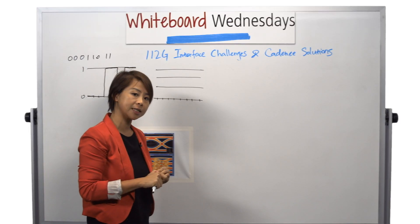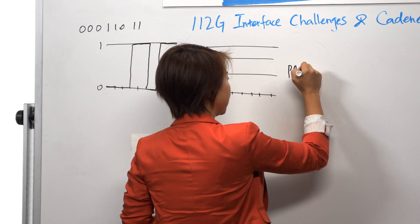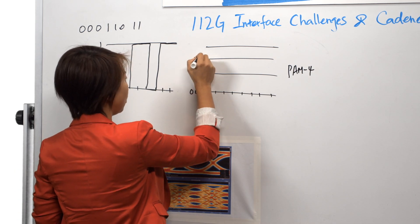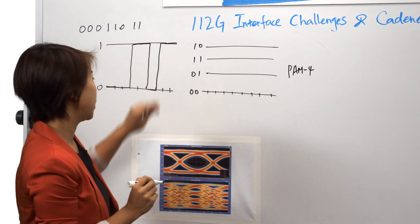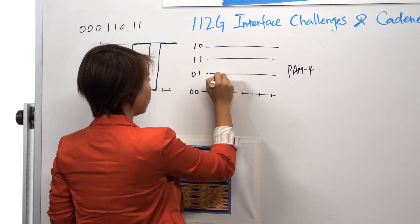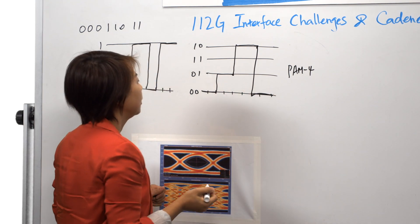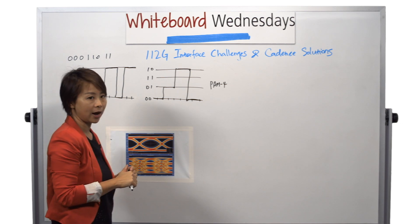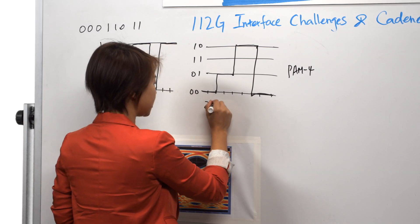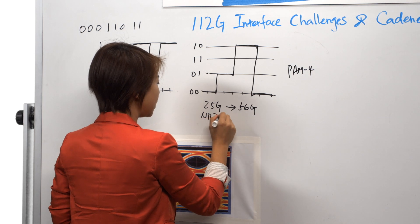However, starting from 56-gig SerDes, the PAM-4 signaling has been required. PAM-4 signaling is a multi-level signaling. There are four levels: 00, 01, 11, and 10. So for the same data stream, the waveform you will get with PAM-4 is something like this. First 00, and then 01, and then 10, and then 11. So as you can see, what PAM-4 signaling provides is double the data rate without increasing the clock rate. And this is exactly how 25-gig SerDes gets to 56-gig SerDes, by changing the signaling scheme from NRZ to PAM-4.